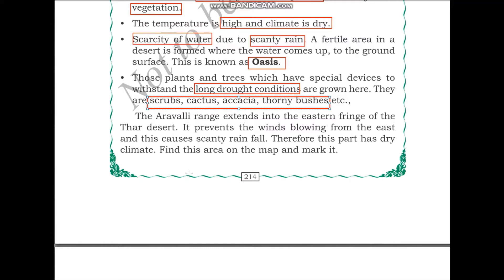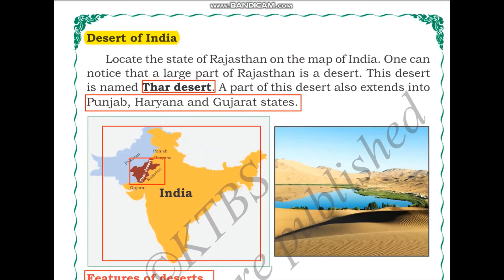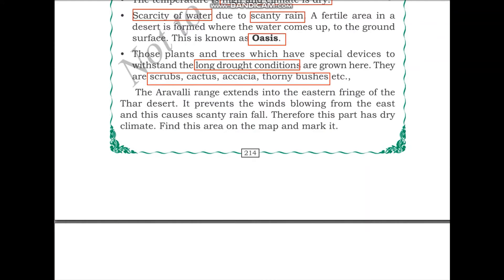Now let us learn about the neighbors of the Thar Desert in India. The Aravali Range extends into the eastern fringe of the Thar Desert. The Aravali Range prevents winds blowing from the east, and this causes scanty rainfall. It acts like a barrier for rain-bearing winds to blow into the desert, which is why there is less rainfall in the desert region. Therefore this part has a dry climate.